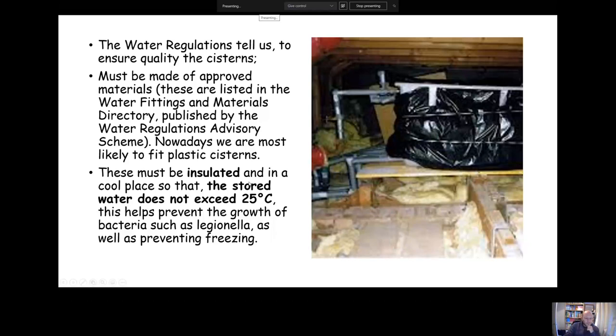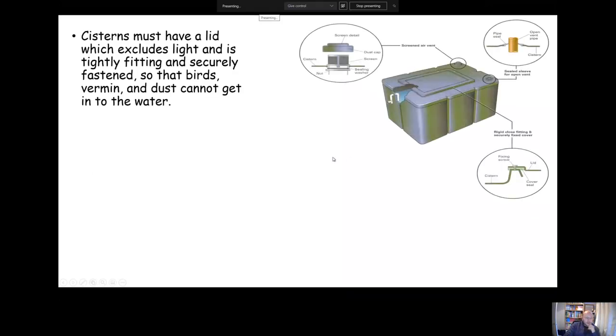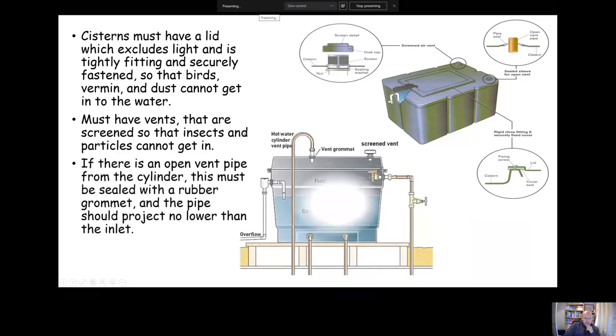As I've already said, systems must have a lid which will exclude light and should be tightly fitting so it stops any birds or vermin or dust getting into the cold water storage system. They must have vents, a screened air vent, to stop insects and particles getting in. If it has a vent pipe coming up from the hot water cylinder, it should be sealed with a rubber grommet to make sure it remains sealed. Another thing worth noting: when you put a vent pipe in, that shouldn't project down very far. It should literally just go into the system by maybe 25 mil and not project down any further than the inlet.